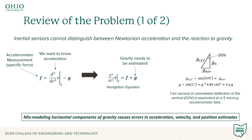The core of the problem is that inertial sensors cannot distinguish between Newtonian acceleration and the reaction to gravity. Accelerometers measure specific force; however, an INS needs acceleration so it can integrate a couple times and give position. As shown in the equations below, gravity needs to be estimated so the acceleration can be isolated.